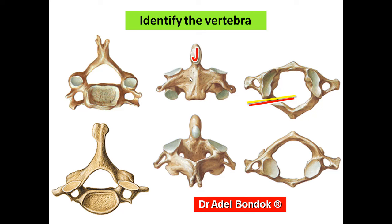The joint between the axis and atlas — the median atlanto-axial joint — is a synovial pivot joint. The articular fossa of the atlas articulates with the occipital condyle to form the atlanto-occipital joint — a synovial ellipsoid joint. The lateral atlanto-axial joint is a plane synovial joint.